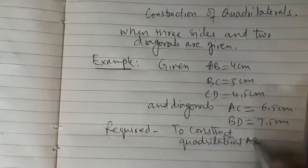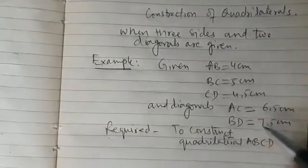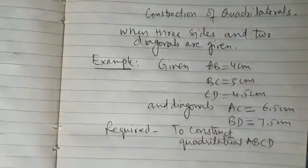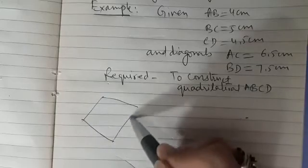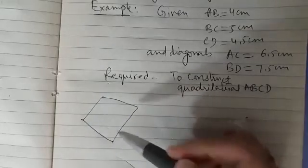We will be using all these dimensions for the construction of quadrilateral. Now first of all we will be making a rough figure. So let me make a rough sketch of this so that we can understand how we can do the construction. So this is A, B, C, D.